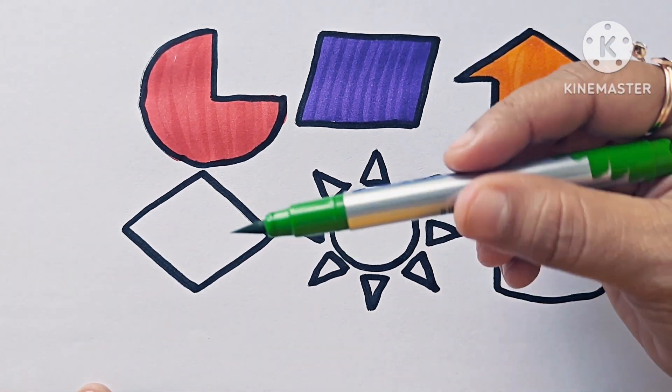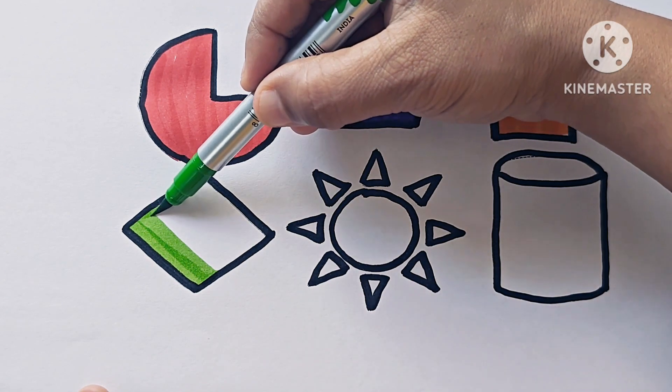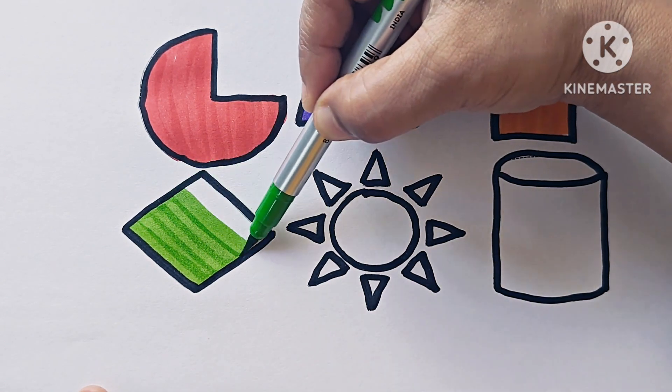This is light green color. This shape is diamond. It has four sides.